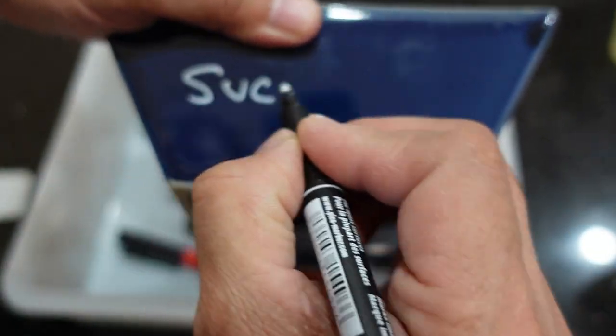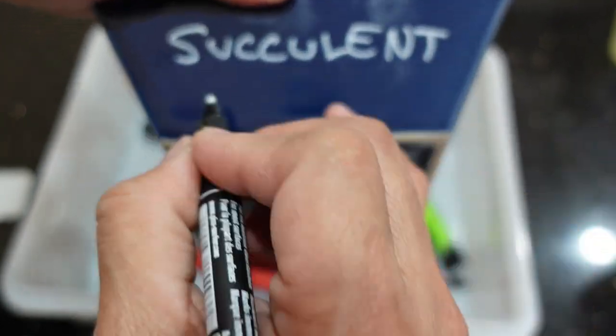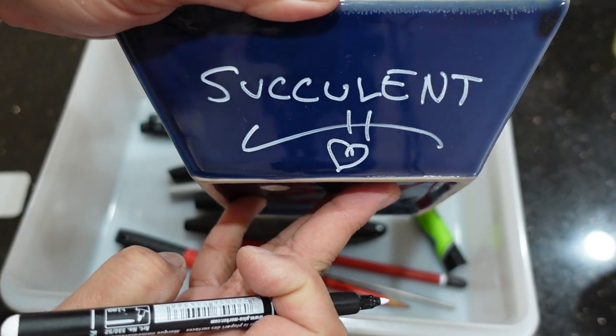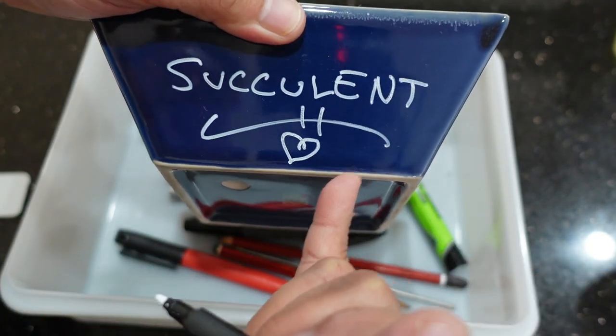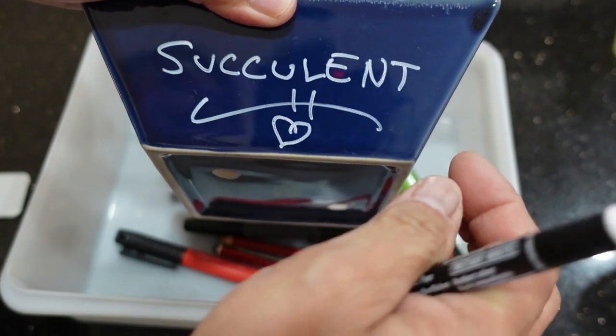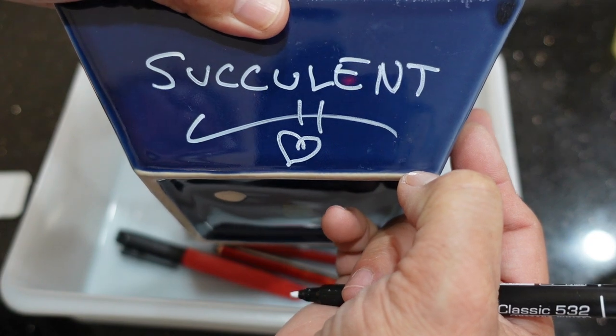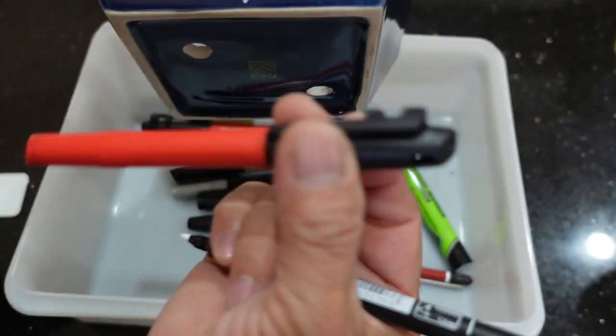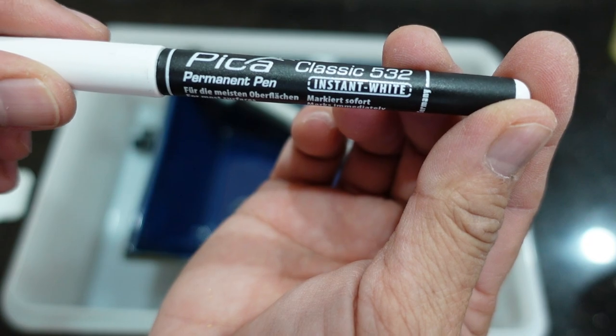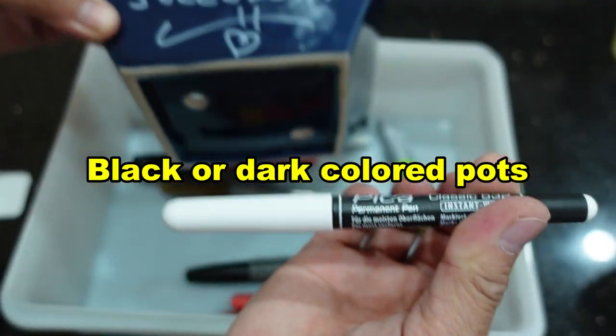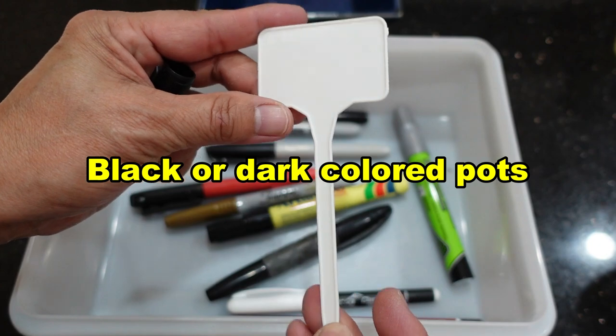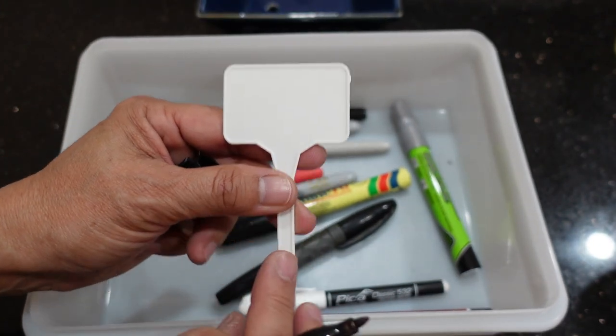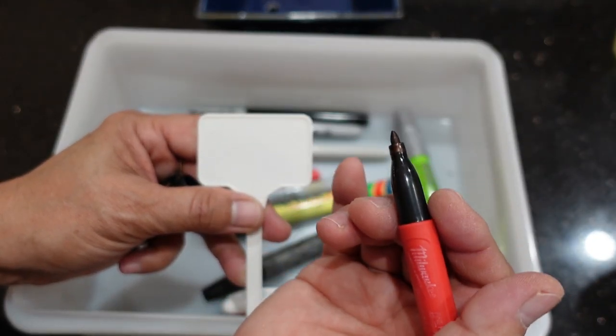So say for example even on ceramic pots like this, you can write it here. And say succulent. I am writing sideways. And with the heart. And that will actually last so far the longest. So when it dries you actually have to scrape it off. You see that? To remove it. So this has surpassed or lasted longer than my black marker here. So it says Pica Permanent Marker. So I really really love this one for black pots.